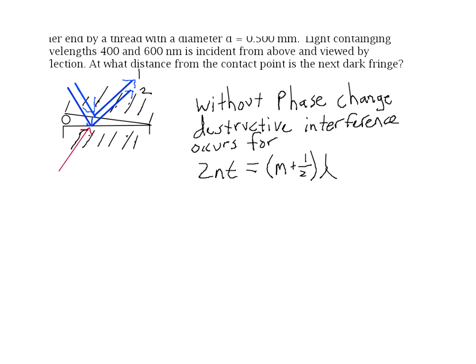This is an example problem showing how to find interference fringes with two glass plates that are separated by a thread, making an air wedge between them. In this problem we have two glass plates, 10 centimeters long, in contact with each other at one end, and they're separated at the other end by a thread with a diameter of 0.5 millimeters.